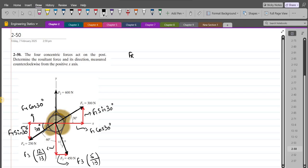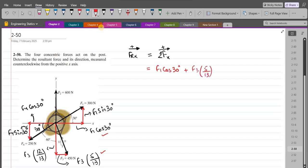For the horizontal component of the resultant force, we have FRx. I am considering the right-hand side as positive. This equals summation of forces in x direction. So we have F1 cos 30 plus F3 times the ratio of 5 upon 13 minus F4 cos 30.